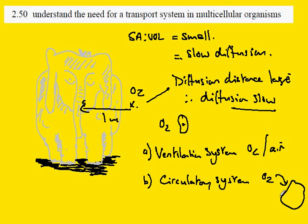And in doing so, this gives it a short diffusion distance. So if the oxygen is delivered right to the cell, the diffusion times will be short. This is why we need ventilation and circulatory systems.